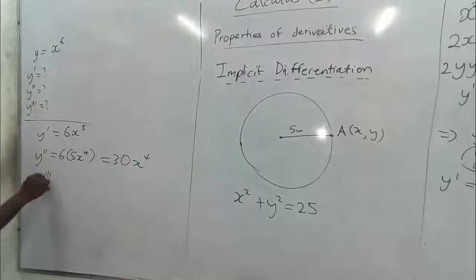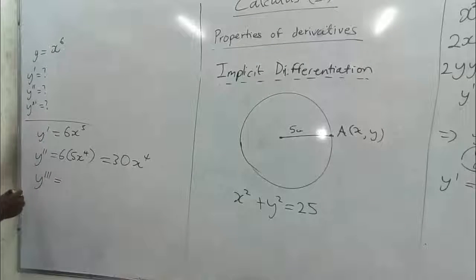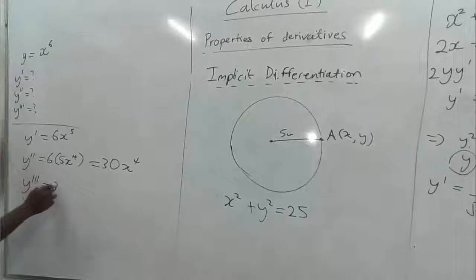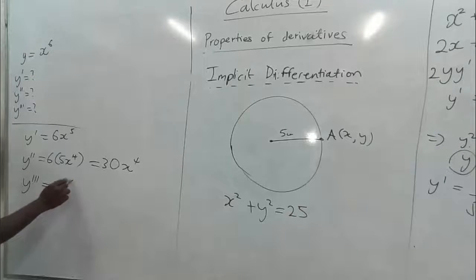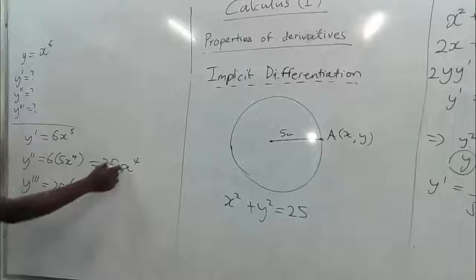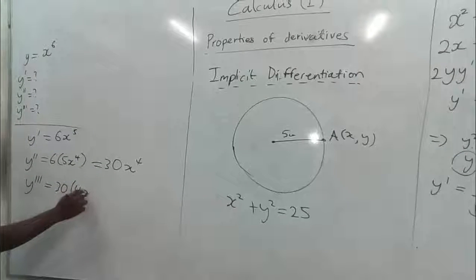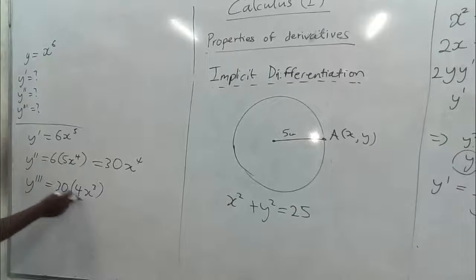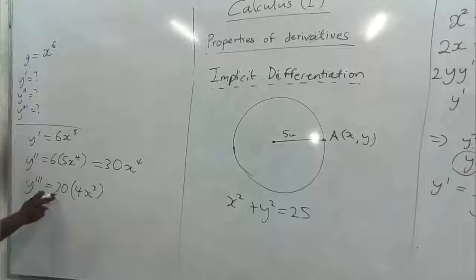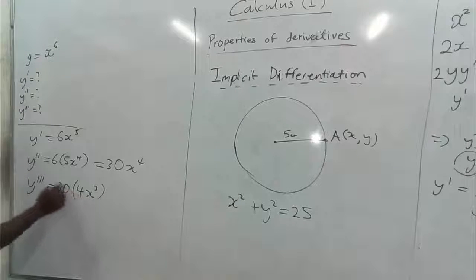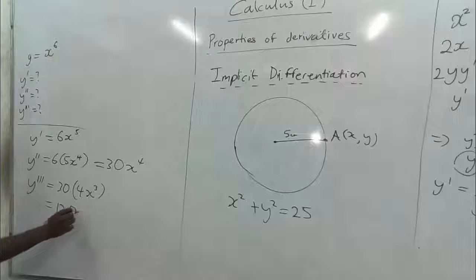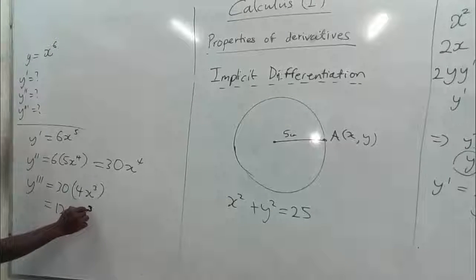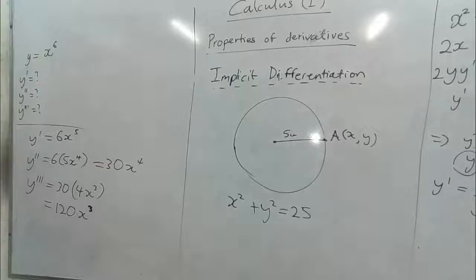Also y to the third prime, that is the third derivative, we differentiate the second derivative, which is we take the 30 and we differentiate x to the power 4 gives us 4x to the power 3. So we can simplify this, 4 by 30, so we have 120x cubed to the third power.